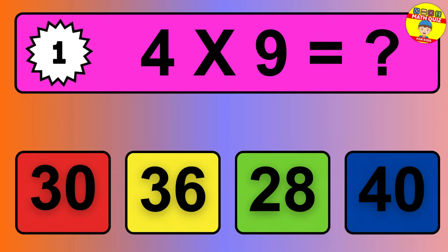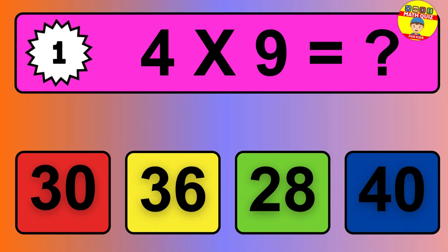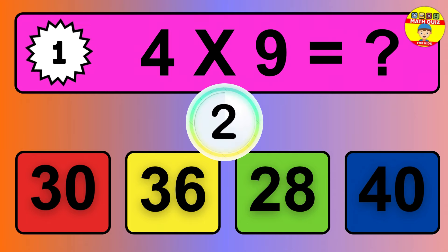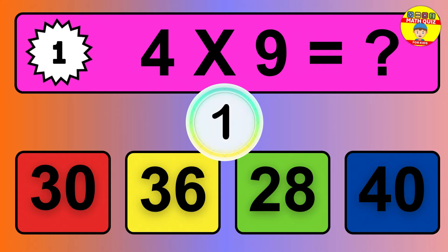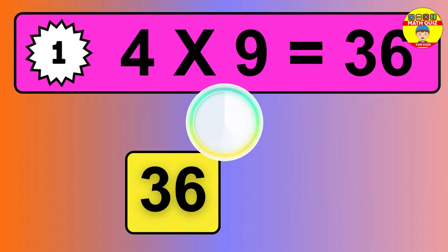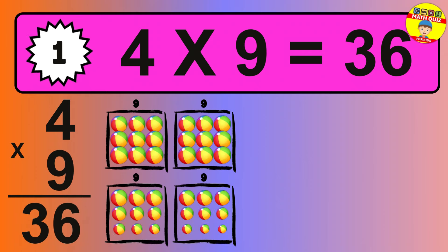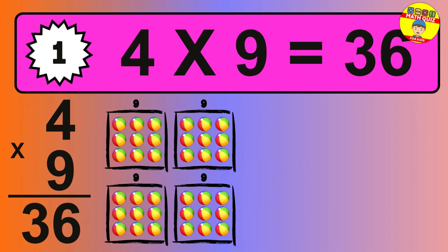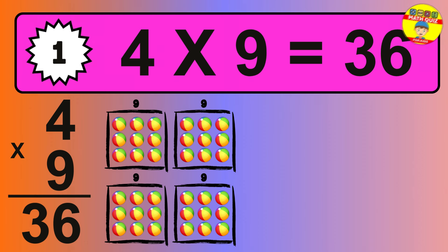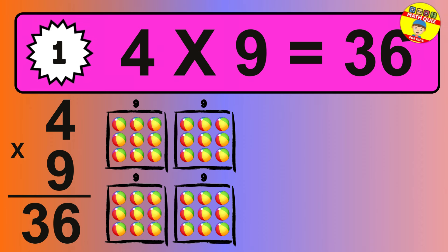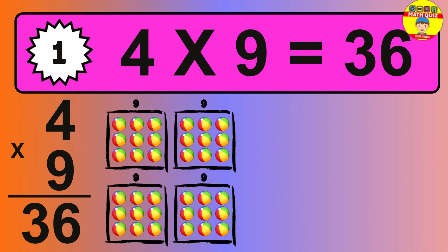Question 1. 4 times 9 equals what? The answer is 4 times 9 is 36. To calculate, we have 4 groups with 9 balls each one. So how many balls do we have? 36 balls.